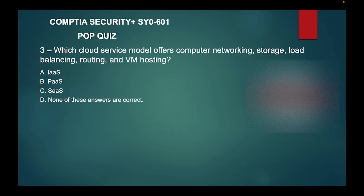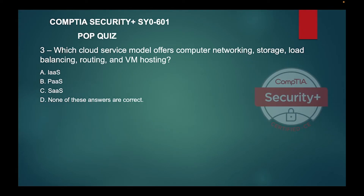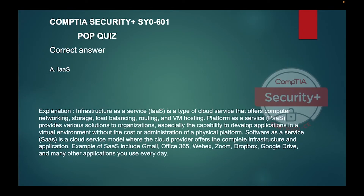Question three: Which cloud service model offers computer network, storage, load balancing, routing, and virtual machine hosting? A) Infrastructure as a Service, B) Platform as a Service, C) Security as a Service, or D) None of these answers are correct. The correct answer is A — Infrastructure as a Service (IaaS), which offers computer networking, storage, load balancing, routing, and virtual machine hosting.